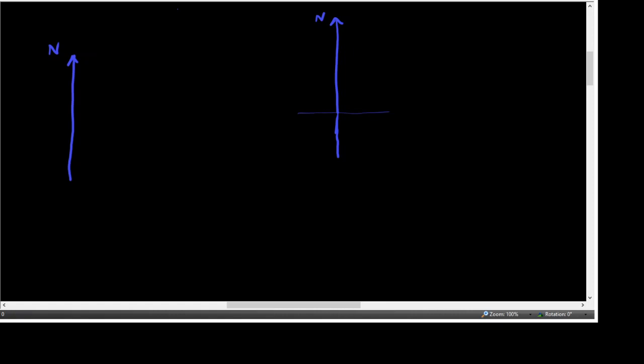All right, so we have a bearing of 239 degrees. So that's 90, 180. 270 would be too far. So 180 plus what is 239? 59 degrees. So that's about right there. Let's say there's our 239 degree angle from due north, clockwise from due north.